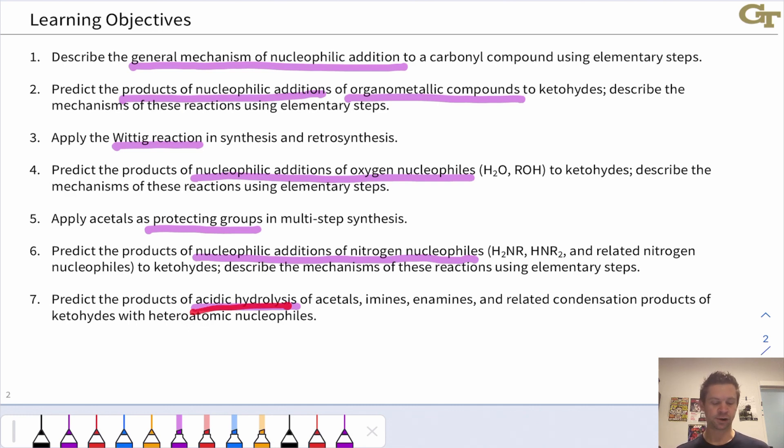This is done through acidic hydrolysis, treating these CN double bond compounds with acidic water. We'll look at acetals, imines, enamines, and related compounds where treatment with acidic water gives us back a ketone or aldehyde.